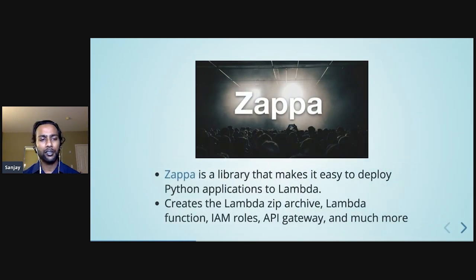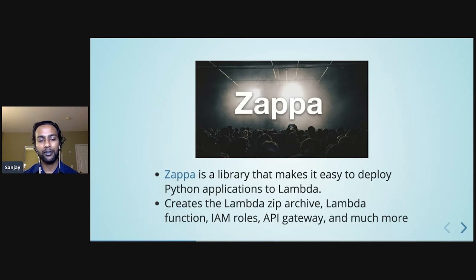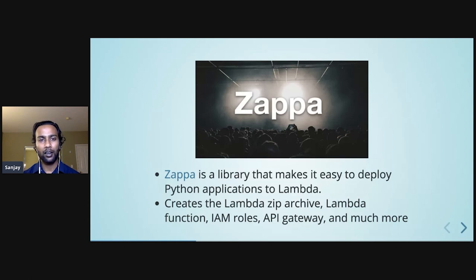I want to first introduce a tool called Zappa, which is an incredibly useful Python library. It's open source, and it makes it so easy to deploy Python applications to Lambda with just a couple commands. Lambda expects a zip archive with all of your code and all of your dependencies, and Zappa creates this archive for you, in addition to creating basically all of the AWS infrastructure that you need. All you need to get started is an AWS account.